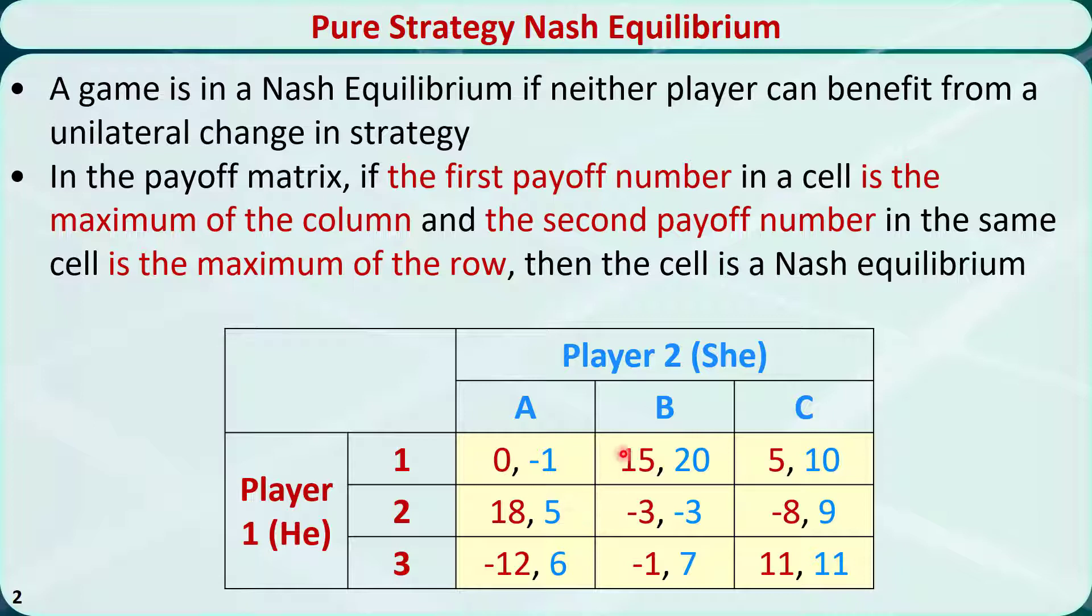The maximum number of player 1's payoff in the second column is 15. Let's check if player 2's payoff is the maximum of the row. Yes, 20 is the maximum number. So this cell is an equilibrium.